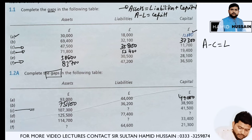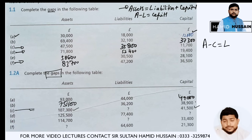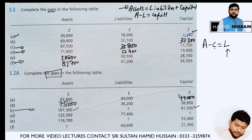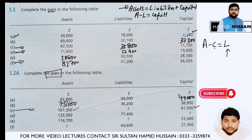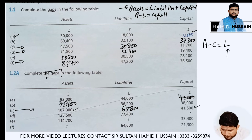In part C, assets are given and capital is given. To find out liabilities, you need to subtract capital from assets: 107,300 minus 41,500, and you will get 65,800.